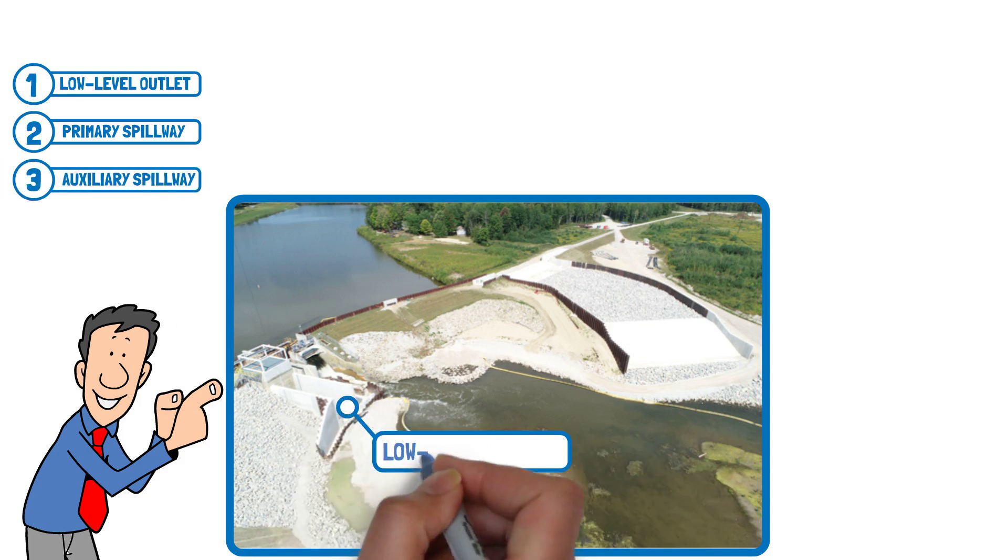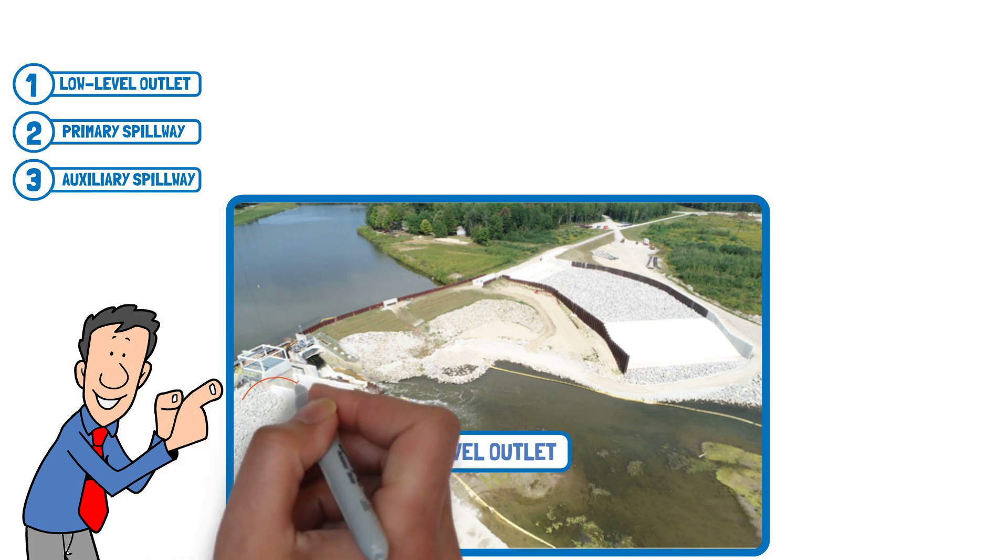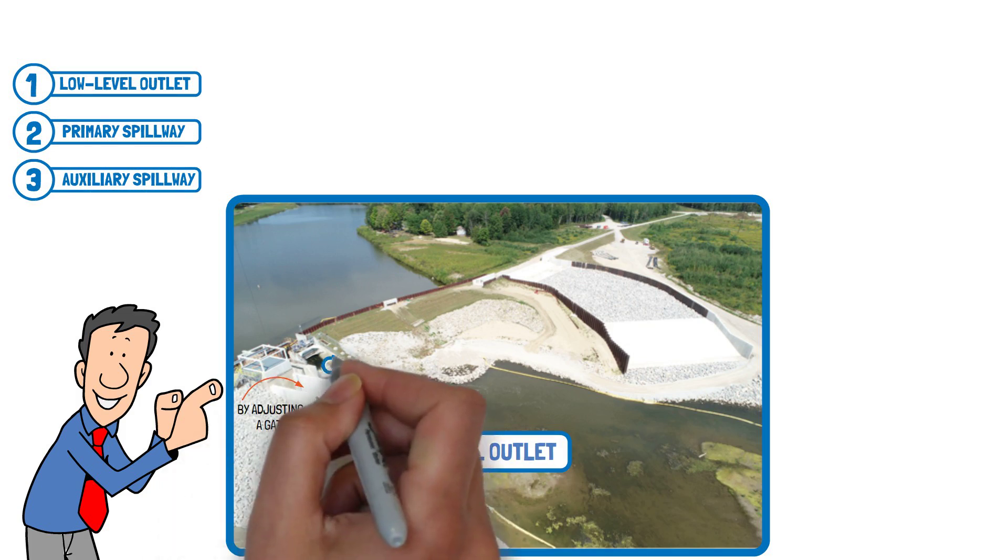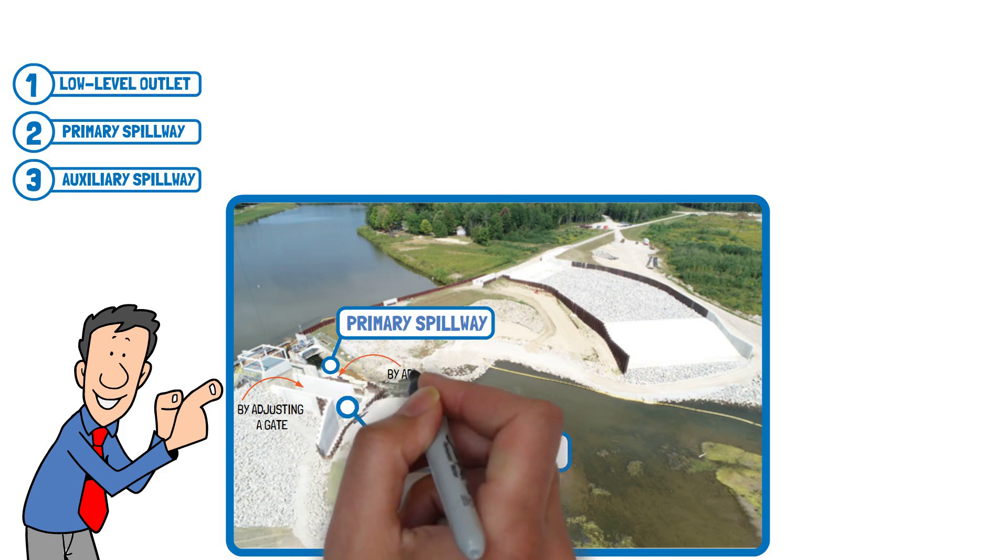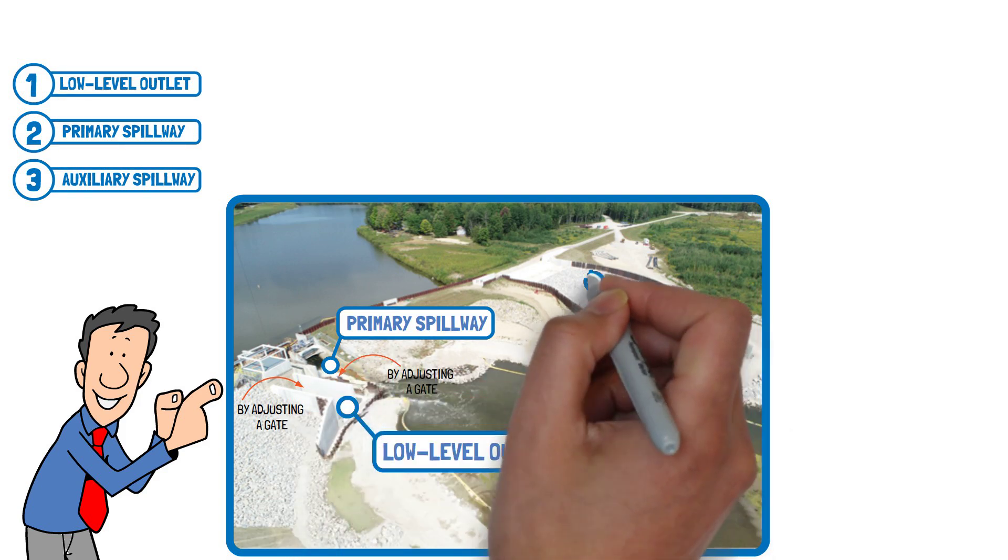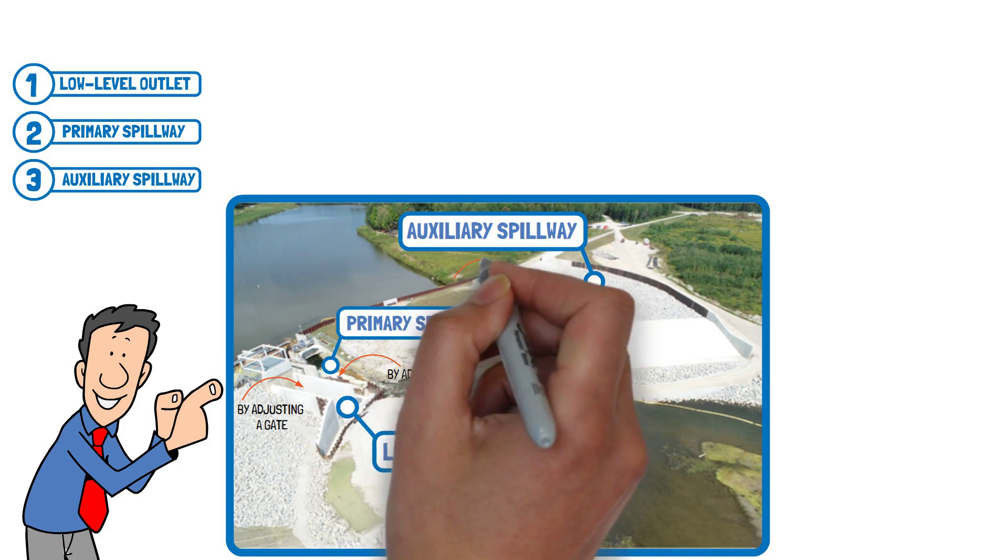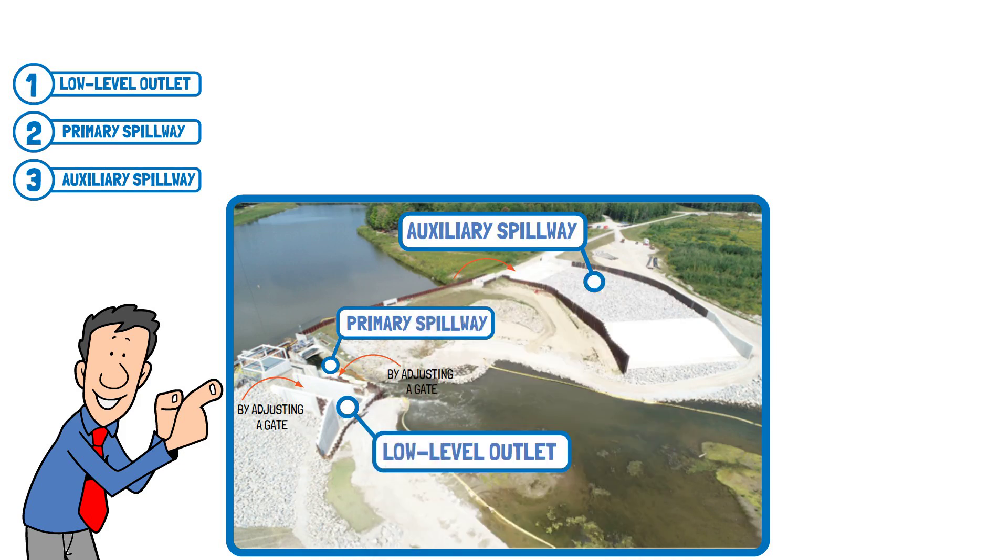A low-level outlet is below the lake level and manages lake flow by adjusting a gate. A primary spillway is above the low-level outlet and manages larger flows by adjusting a gate. An auxiliary spillway is above the lake level and can hold significant capacity to protect the dam from failing.